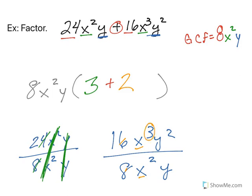And then I take 16x cubed y squared divided by 8x squared y. 16 divided by 8 is 2. Same base. When I divide, I subtract the exponents. So 3 minus 2 is 1. So I have x to the first. And then with my y's, same base, 2 minus 1 is 1. Now we don't need the exponent if it's a 1. So my final answer is 8x squared y times the quantity 3 plus 2xy.